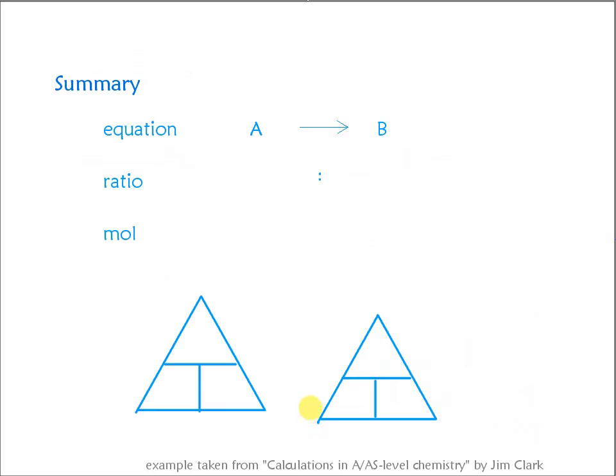Just generalizing what we've done, because you'll have a different equation with different amounts. Look at that equation and the stoichiometry, the big numbers involved. If we've got a 2 there and a 1 there, that's a 2 to 1 ratio. So however many moles we've got here, you'd need to halve it to get that amount of mole there.